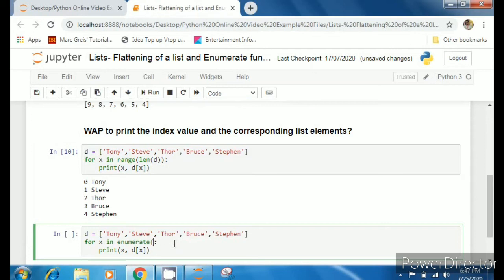Now I need two variables because I need two outputs: I need index and I need the value. So I need two variables to hold these two things. I am writing for x comma y in enumerate(d).